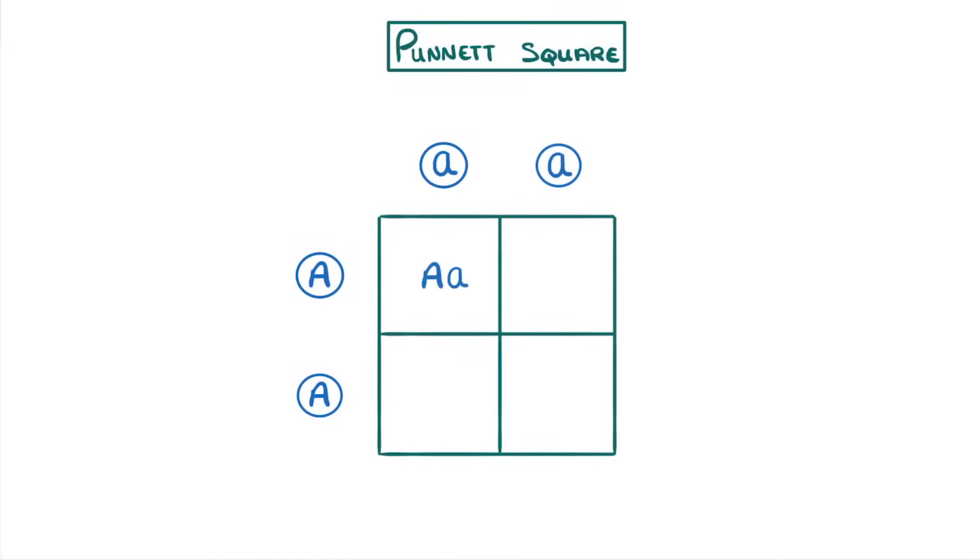So the top left square gets the capital A from the left parent and the lowercase a from the top parent. And we do the same thing for all of the others.